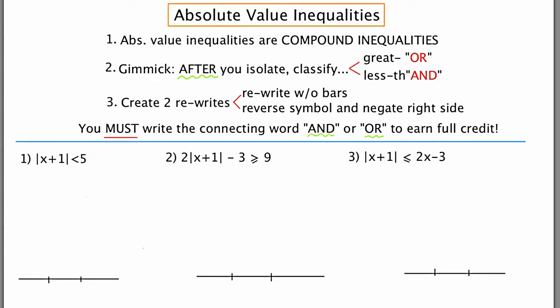The first is that absolute value inequalities are compound inequalities, and for that reason we're going to see words like and and or floating around in our response. I'm going to give you a gimmick in step two which will help you classify the problem as an and problem or an or problem.